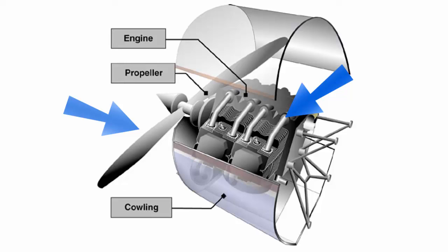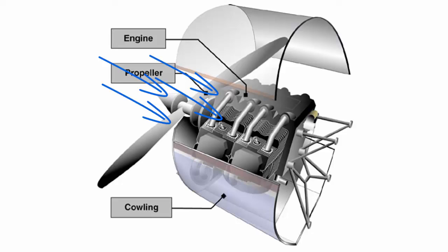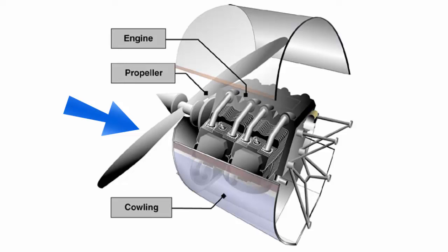The power plant usually includes both the engine and the propeller. The primary function of the engine is to provide power to turn the propeller. It also generates electrical power, provides a vacuum source for some flight instruments, and in most single-engine aircraft, provides a source of heat for the pilot and passengers. The engine is either covered by a cowling or a nacelle, the purpose of which is to streamline the flow of air around the engine and to help cool the engine by ducting air around the cylinders.